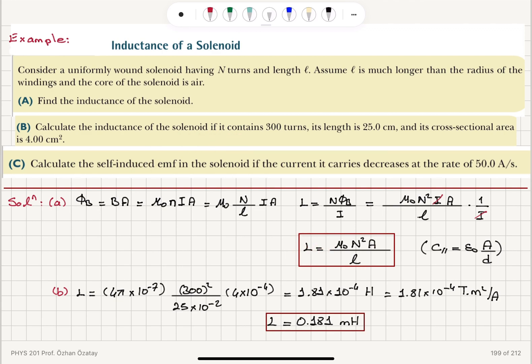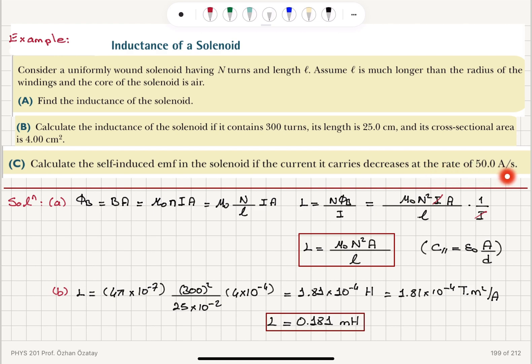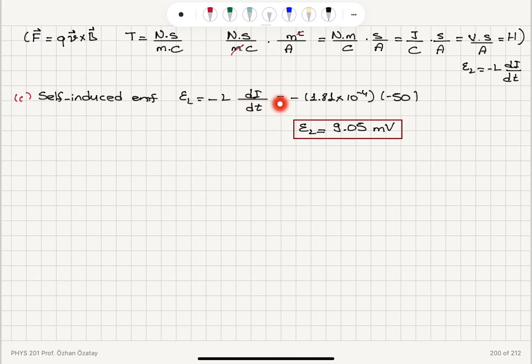If we plug in the given numbers, we obtain 0.181 milli Henry. And here I have gone through some exercise to show you that this is actually indeed Tesla meter squared per ampere. Tesla meter squared per ampere is equivalent to volt seconds per ampere. And for the self-induced EMF minus L di dt, if the current is decreasing at a rate 50 amperes per second, di dt is minus 50. Multiplying it by the inductance, we find the self-induced EMF 9.05 milli volts.